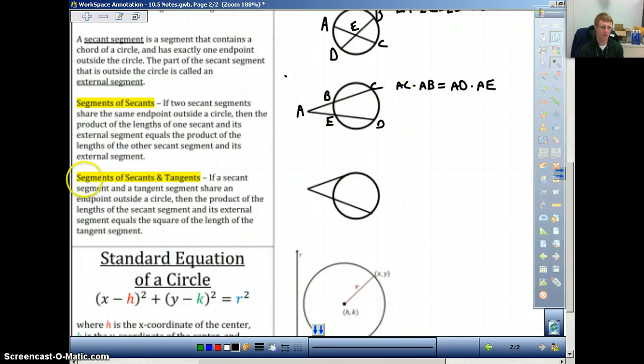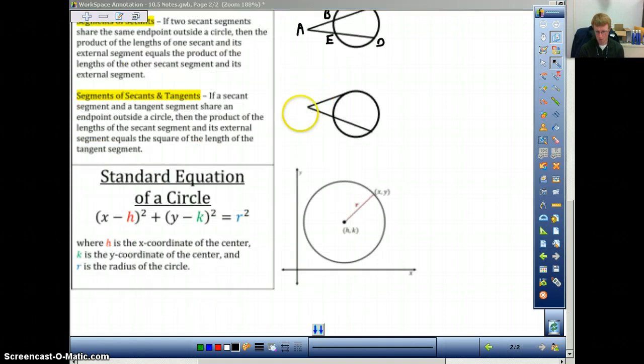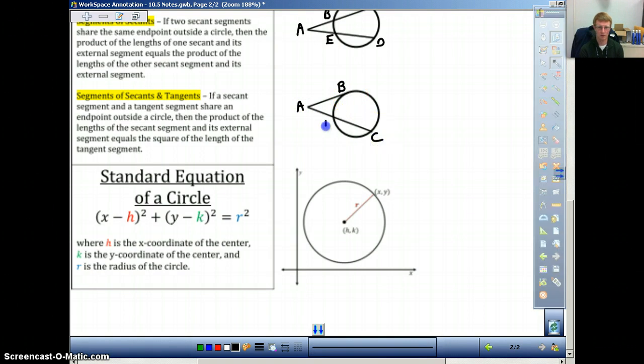The last thing is a segment of secants and tangents. In other words, if one is a tangent and the other one's a secant, there's a formula that works here. It says, if they share an endpoint outside the circle, then the product of the lengths of the secant segment and its external will be equal to the tangent line squared. Again, let's label this so you can see it. Scroll down a little bit here. So, A, B, label it as such, and then C, and then D.